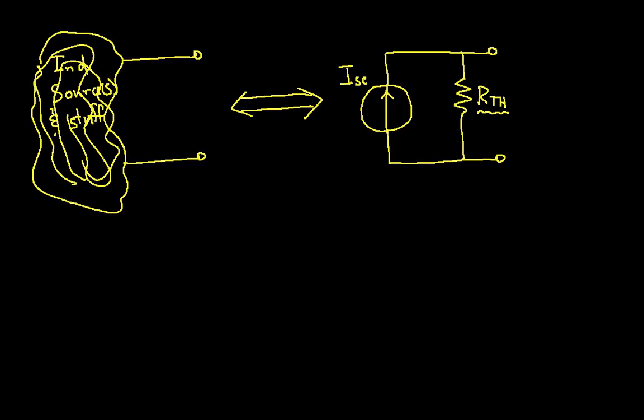So if you're in a position where you need to find a Norton equivalent source rather than a Thevenin equivalent circuit, the process is essentially the same.